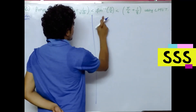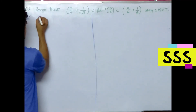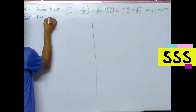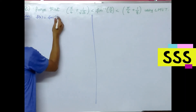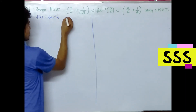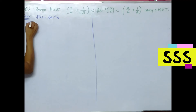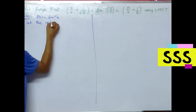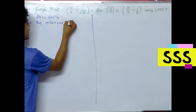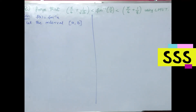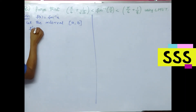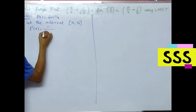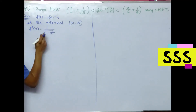First of all, we consider the function f(x) = sin⁻¹(x). Let the interval be [a, b]. What is f'(x)? It is 1 divided by √(1 − x²). This is the derivative of sin⁻¹(x). So f'(c), substituting c, is 1 / √(1 − c²).